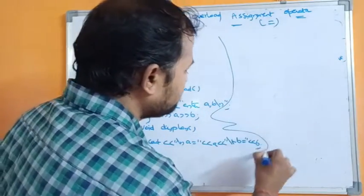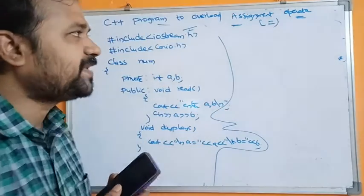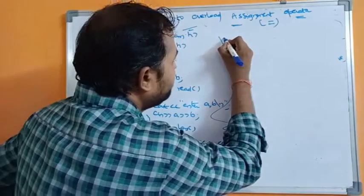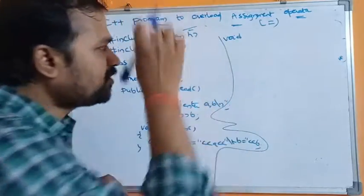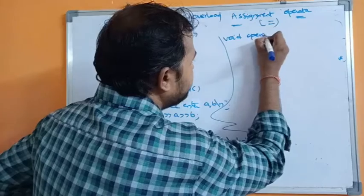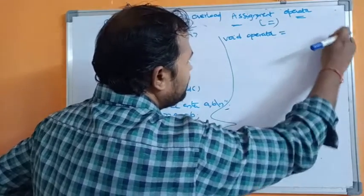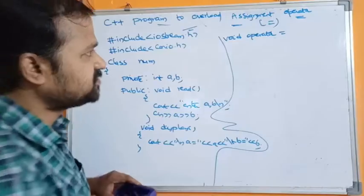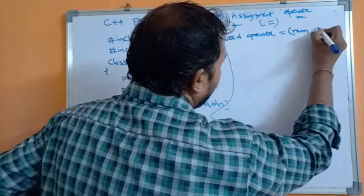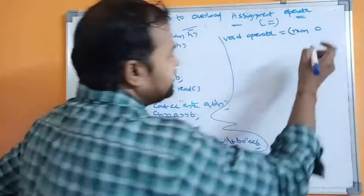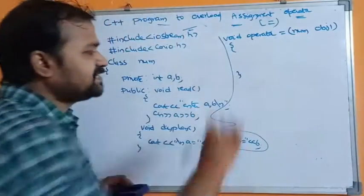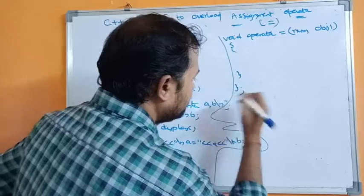We know that the operator function may be either a member function or a friend function. Let us define the operator function as a friend function. Since we are not returning any value, we use void. Next we use the keyword operator followed by the assignment operator =. The class name is num and we need an object parameter here.